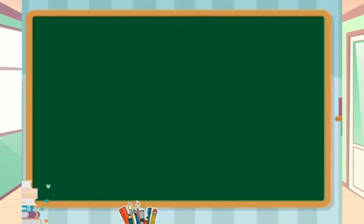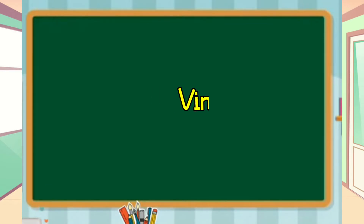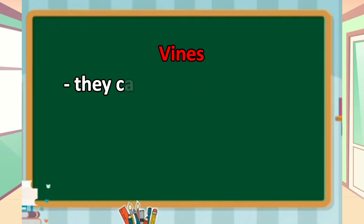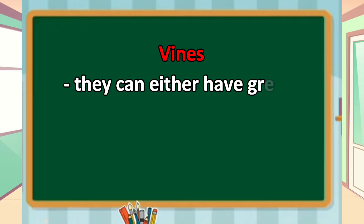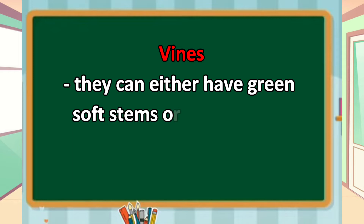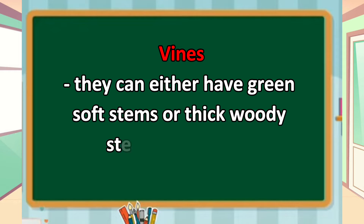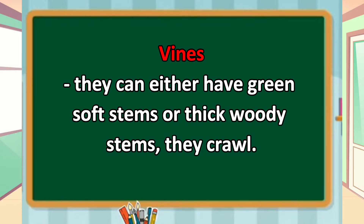The third classification are the vines. They can either have green soft stems or thick woody stems. They grow along surfaces. Samples of vines: